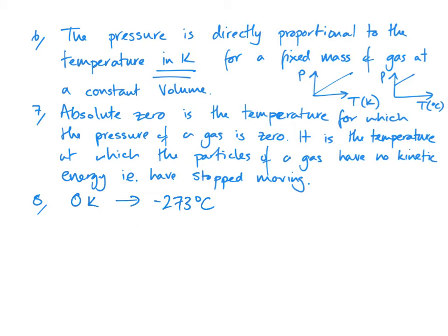What that means is to go from Kelvin to Celsius, you would subtract 273. And to go the other way—if you're at -273, how are you going to get to zero?—you'd have to add 273. So that's how you convert between them.